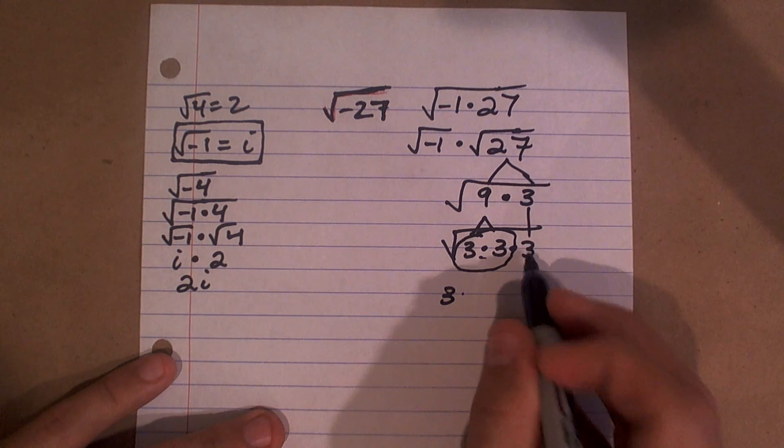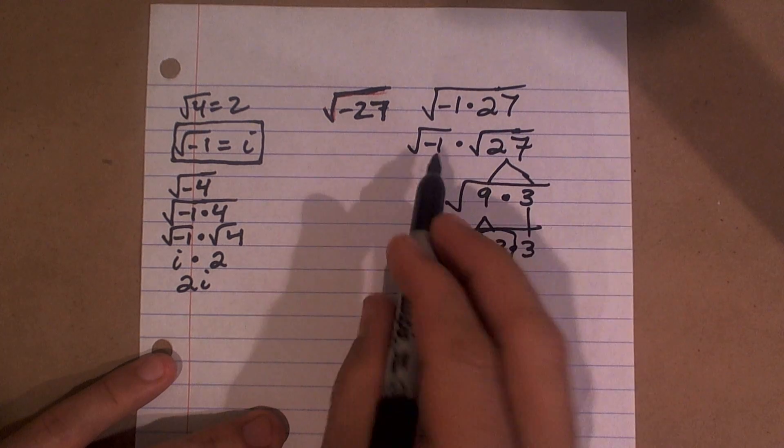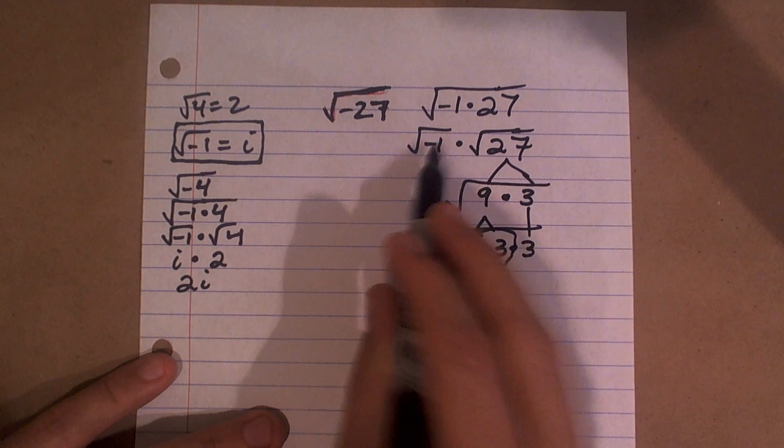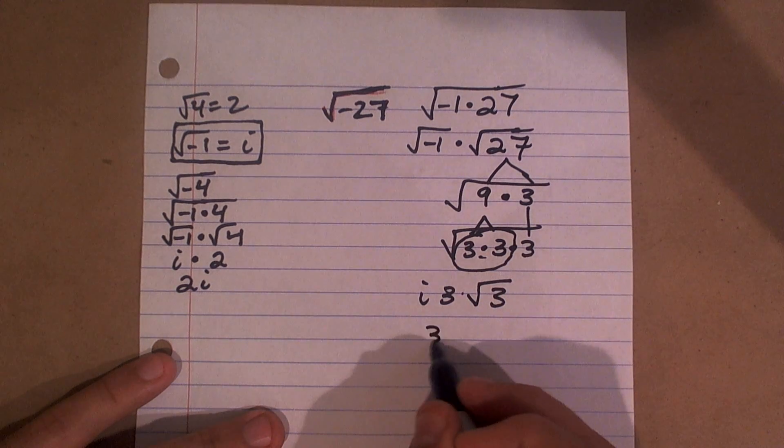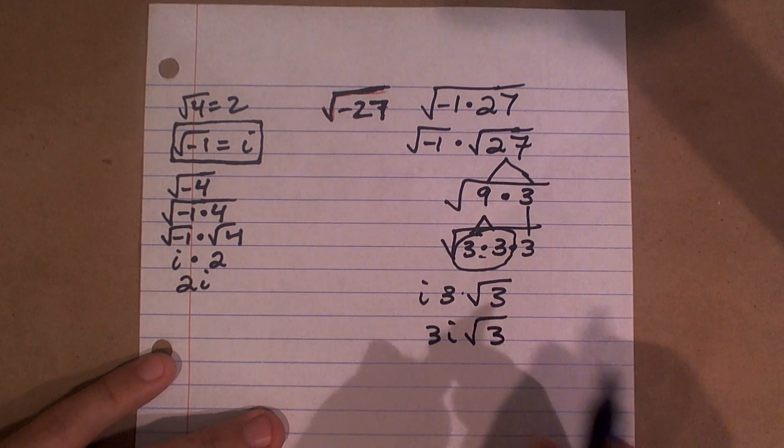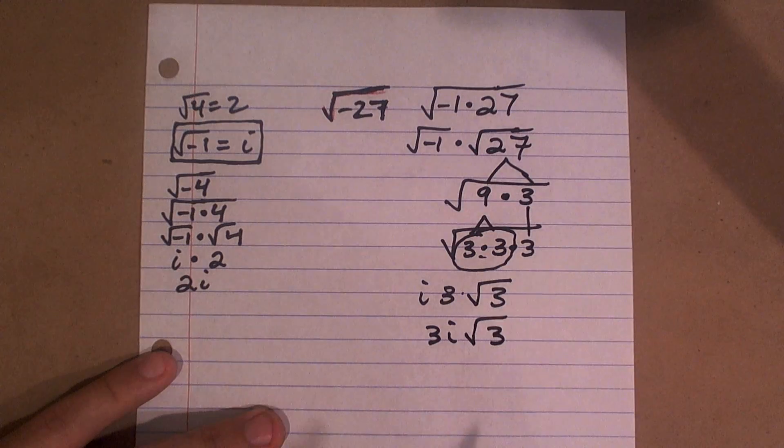So it's going to be 3 radical 3 times the square root of negative 1, which is i. Usually we like to write 3 times i, or 3i times radical 3. That's going to be our final answer.